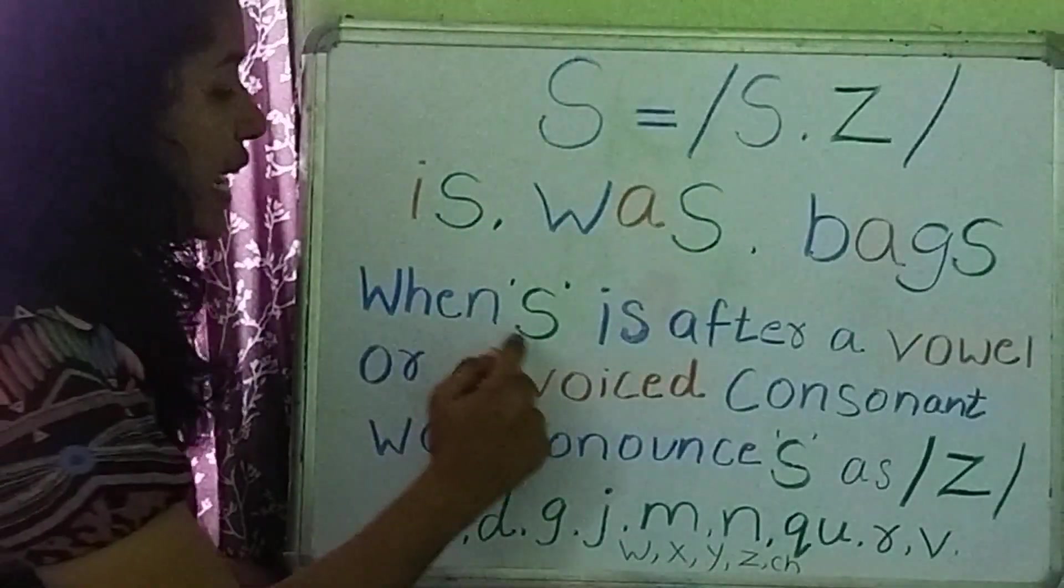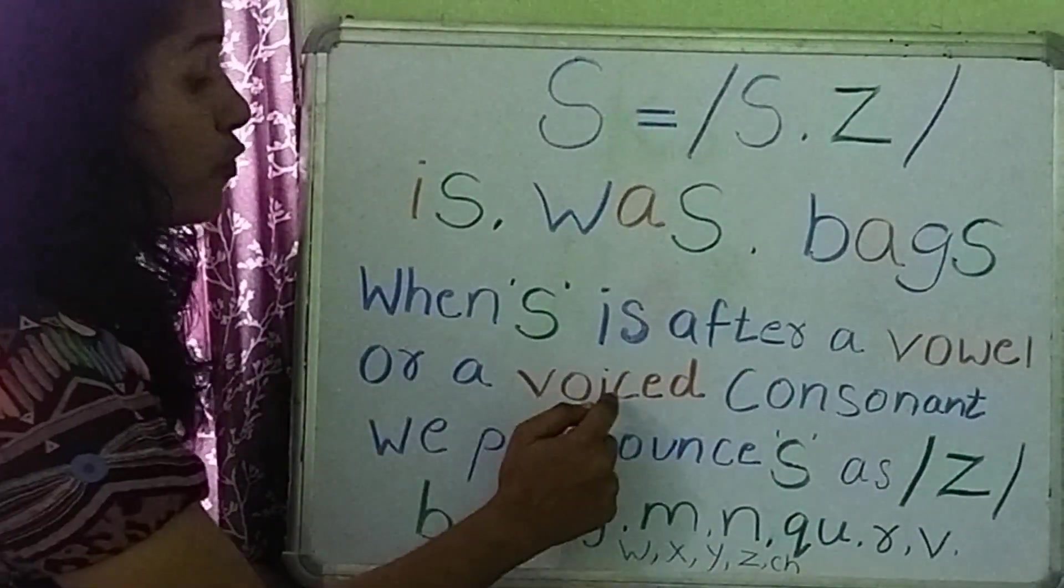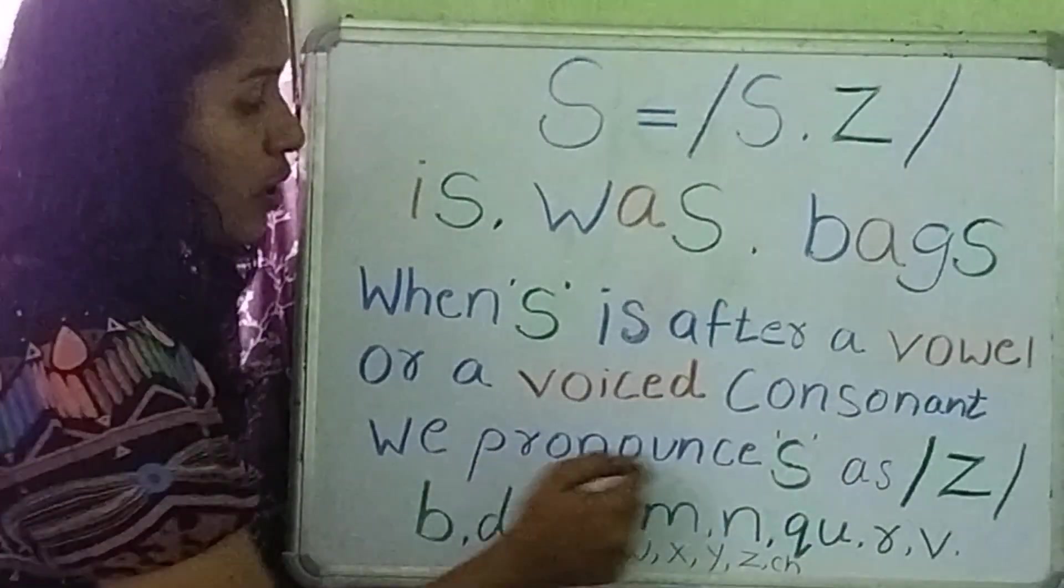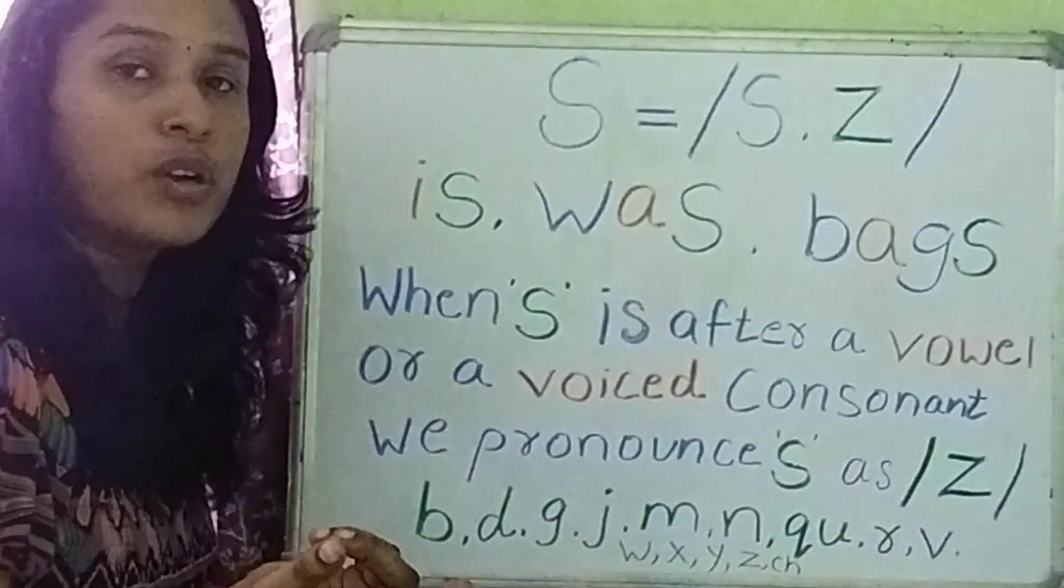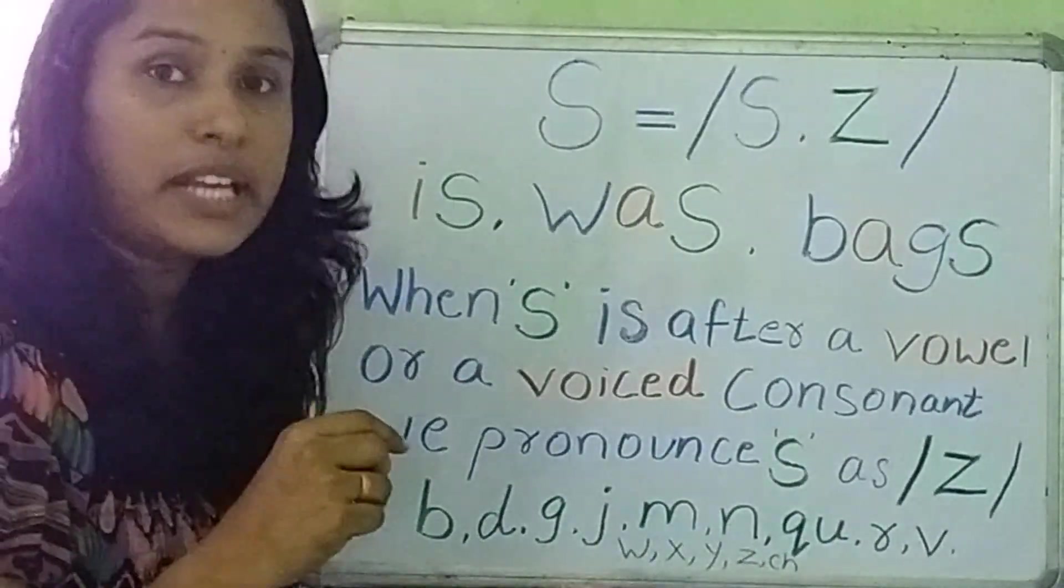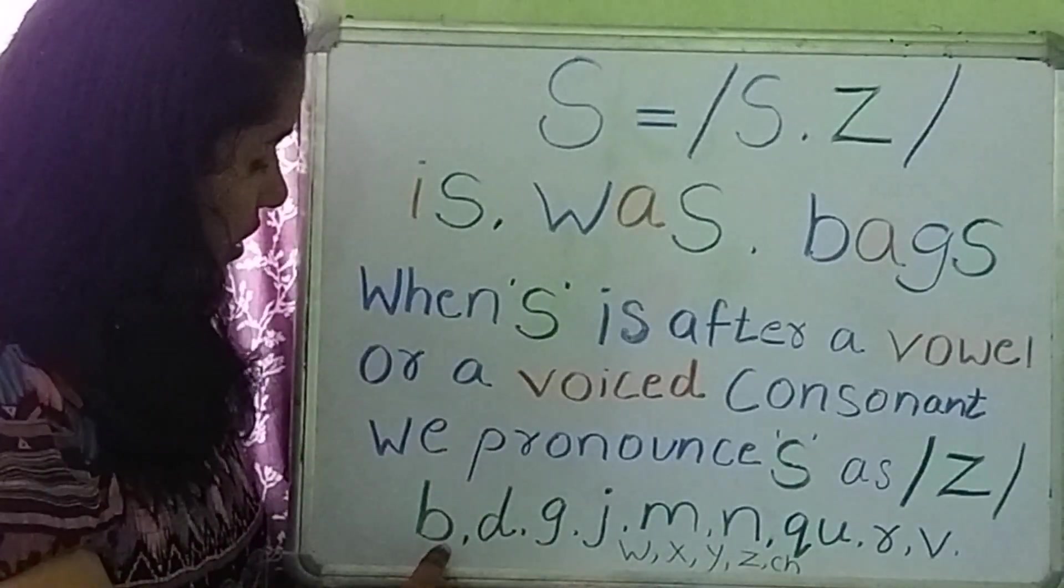Rule is, when S is after a vowel or a voiced consonant, we pronounce S as Z. What is a voiced consonant? It means when we say those consonant sounds, we use our voice box.